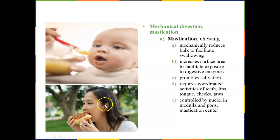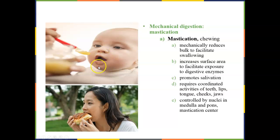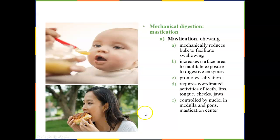Our teeth and gums function in mechanical digestion, known as mastication. Mastication reduces the size of food pieces moving down our throat. In babies, they masticate using their gums, tongue, and the roof of their mouth, but since they don't have teeth, the food has to already be pretty soft. As we get older, teeth allow us to take bites off larger items and break them down into smaller subunits.